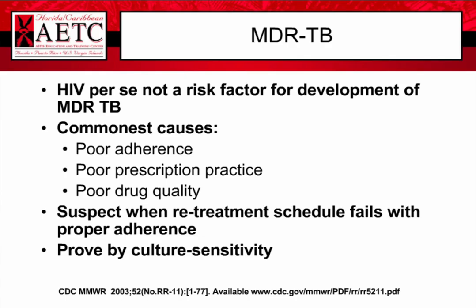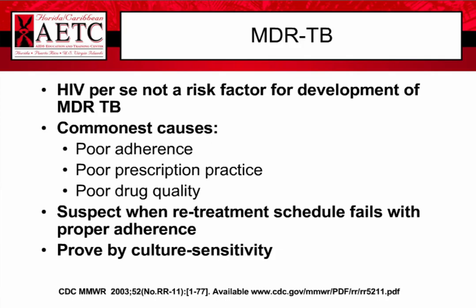For multidrug-resistant tuberculosis, HIV itself is not a risk factor. What contributes to resistance is poor adherence — in areas without resources for directly observed therapy — poor prescription practices where patients run out of medications, lack of treatment continuity, and inadequate drug quality in foreign-born individuals. For example, in India, up to 20% of medications in pharmacies are estimated to be counterfeit. Even patients with documentation of completed therapy may have been inadequately treated, developing multidrug resistance.